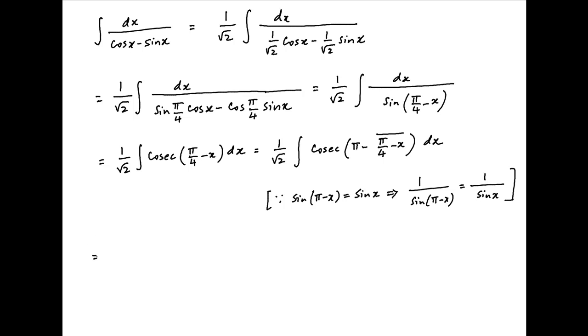Therefore the given integral is equal to 1 upon square root of 2 integral cosec of 3 pi upon 4 plus x dx.